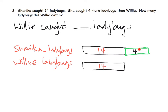The question is: how many ladybugs did Willie catch? So Shanika caught 14 ladybugs — wait, did you see what I did? That's wrong. Shanika caught 14 ladybugs and she caught four more than Willie, so this whole thing is supposed to represent 14. This whole thing represents 14, which really means this part of the bar represents 10, which means this part of the bar also represents 10. How did we get 10? We did 14 minus four is 10. So both bars are 10 — Willie caught 10 ladybugs.